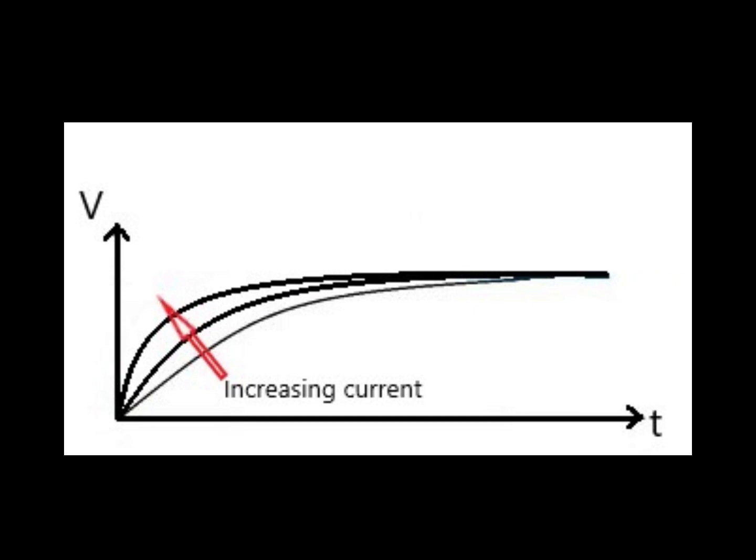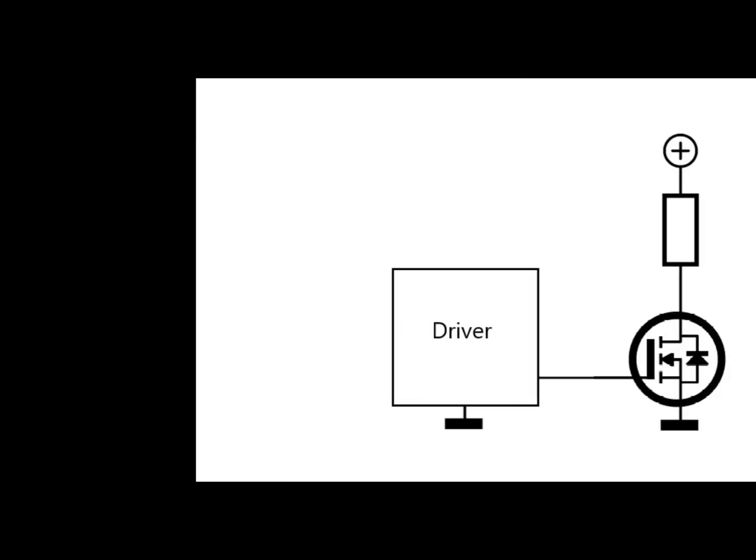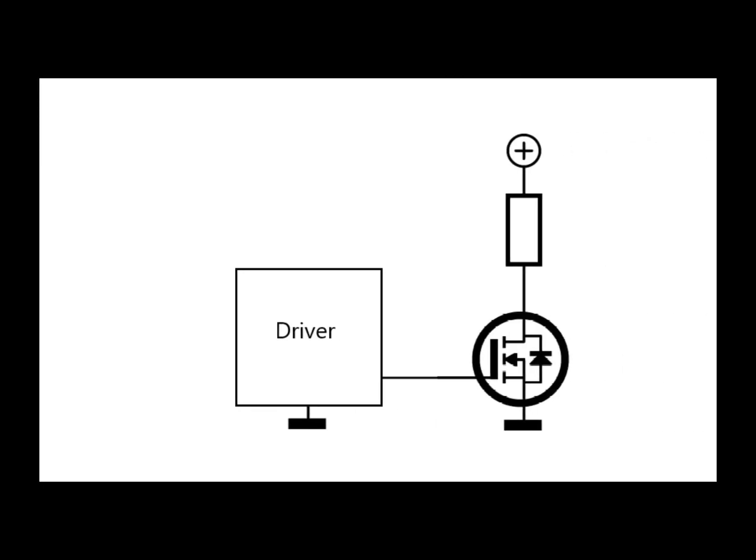The same is true for the gate capacitance of MOSFETs and IGBTs. So to turn on the MOSFET quickly we need a driver circuit which can supply large currents quickly. Now you can build and design your own MOSFET gate drivers, however it's quite cheap these days to simply buy a dedicated driver IC chip.